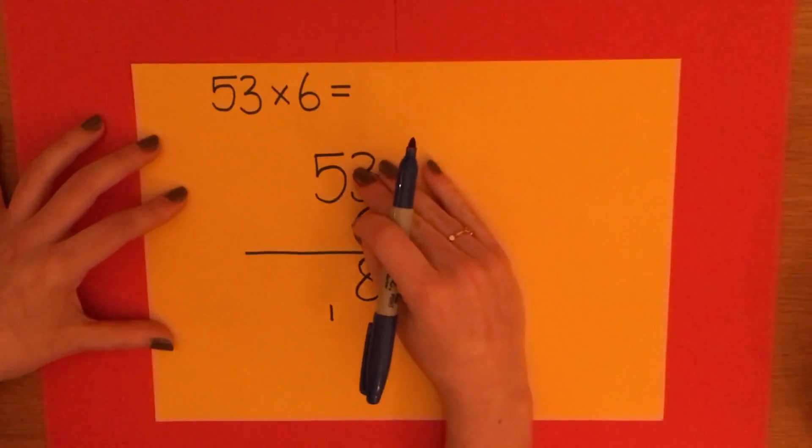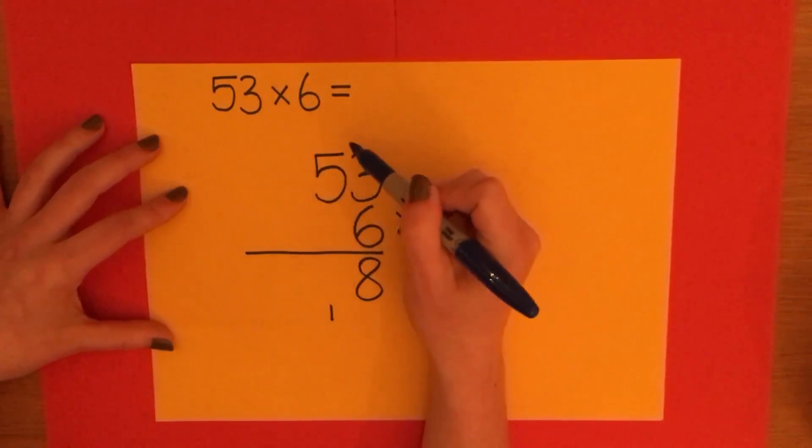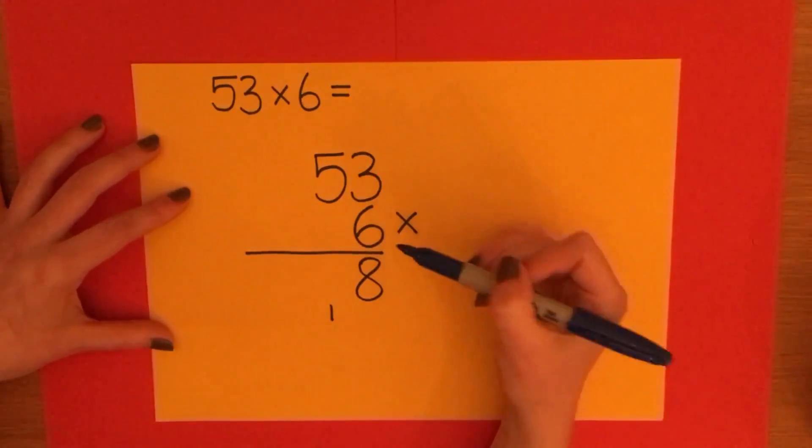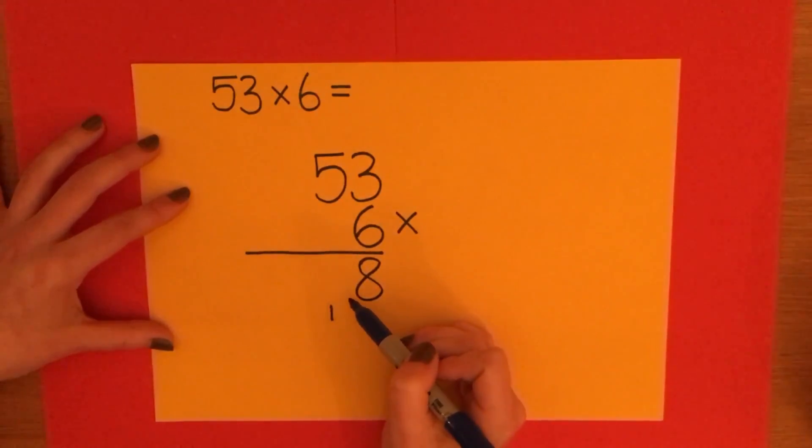So I've multiplied my 2 units together now. I now need to multiply the 50 part by the 6. And to make this easier, we're already in the tens column. So I just need to think, what are 5 lots of 6?